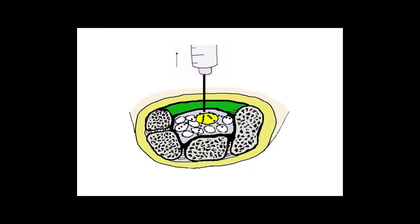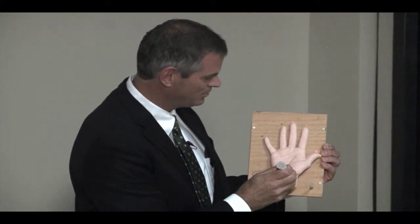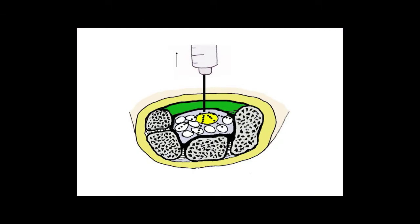These are carpal tunnel injection models. The technique: find the distal wrist crease, go two centimeters distal in the midline, advance slowly until the patient reports that zinging sensation, then pull back a tiny bit and give the medicine there. The injection is one cc of corticosteroid and one cc of lidocaine. Warn the patient that lidocaine will numb their fingers for a couple of hours, since it's bathing the nerve.